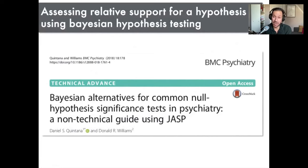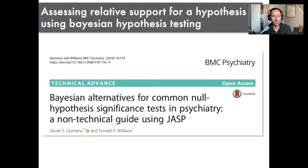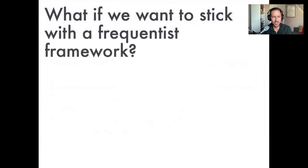One approach for looking at evidence for the null hypothesis is a Bayesian approach. With Bayes factors, you can look at the relative evidence for a null model relative to an alternative model. We've written a primer paper on how to do this for common statistical tests using JASP — point and click, reproducible, and relatively straightforward. So if you're interested in looking at whether there's evidence for a null effect relative to an alternative, this is one option.